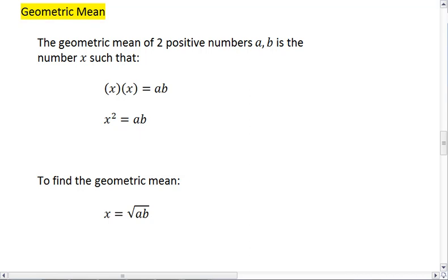The geometric mean of two positive numbers, a and b, is the number x, such that x times x will equal a times b, or that x squared equals ab.